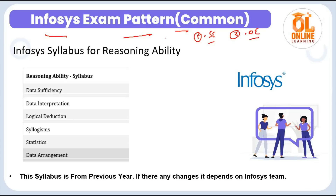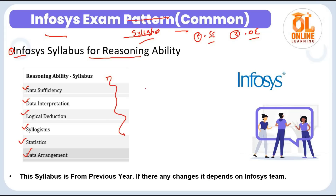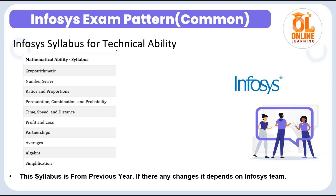Now let me talk about the Infosys syllabus. For the Reasoning Ability section, the topics include: data sufficiency, data interpretation, logical deductions, syllogisms, aesthetics, and data arrangement. These topics are common for both Operation Executive and Systems Engineer examinations.